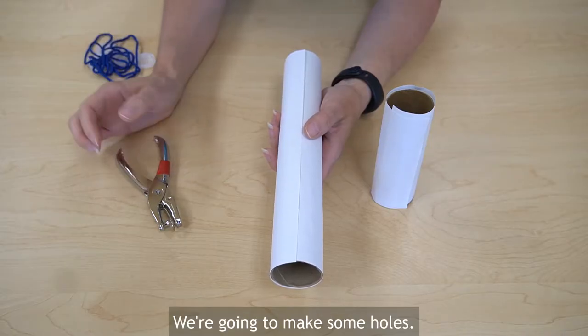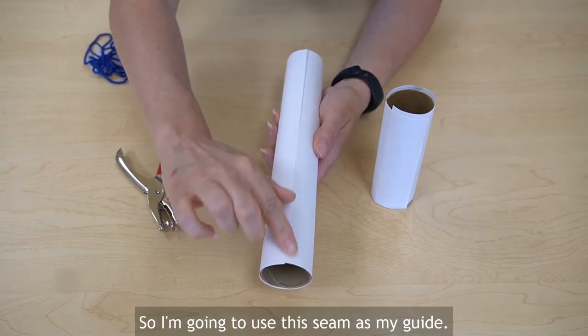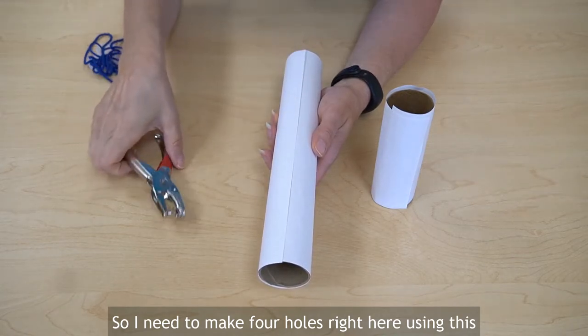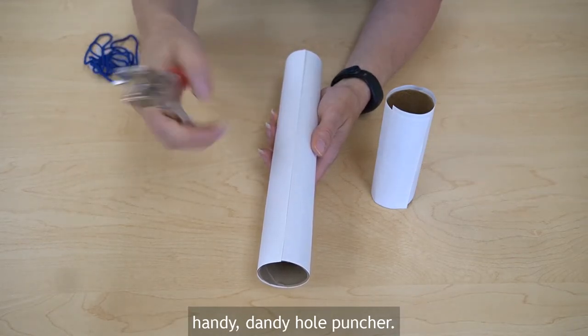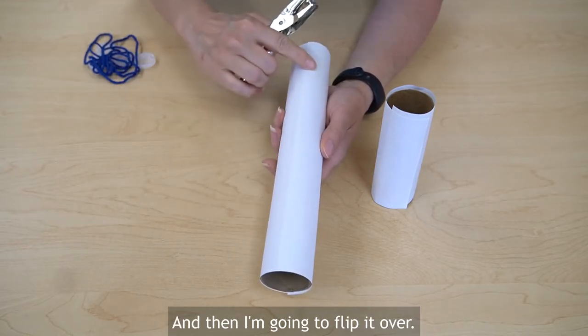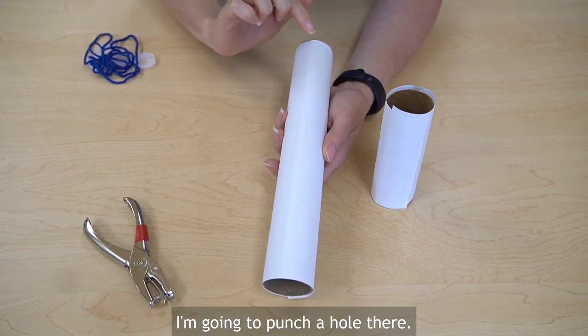Step three we are going to make some holes. So I'm going to use this seam as my guide so I need to make four holes right here using this handy dandy hole puncher and then I'm going to flip it over, I'm going to punch a hole here and I'm going to punch a hole there.